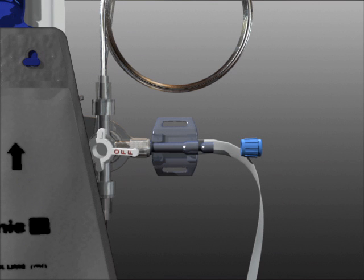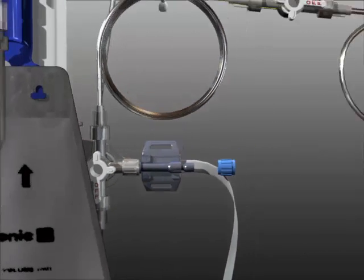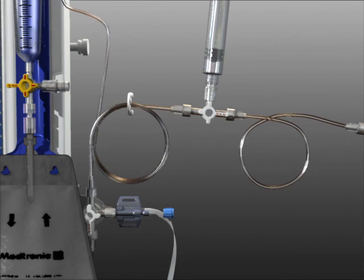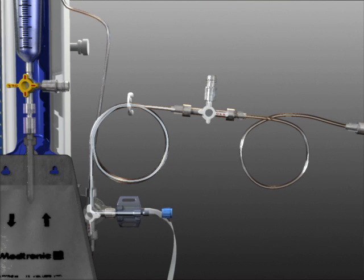Rotate the main system stopcock as shown so fluid flows from the patient line through the transducer, flushing all air bubbles from the transducer. Once complete, retighten the end cap on the transducer.